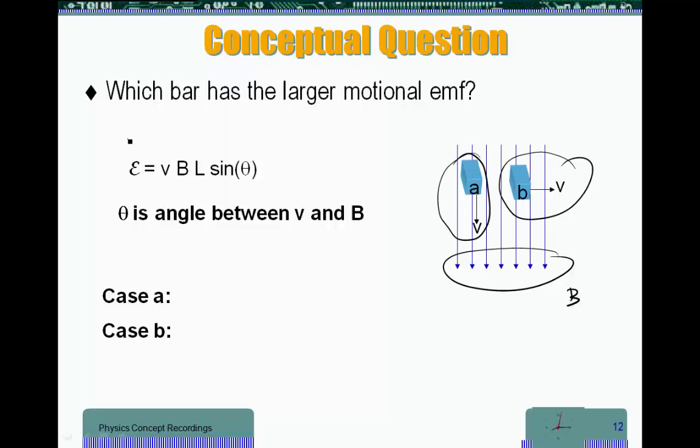Remember, the EMF that's going to be induced in a bar that's moving in a magnetic field is going to be given by V, B, L, sin theta, where theta is the angle between V and B.